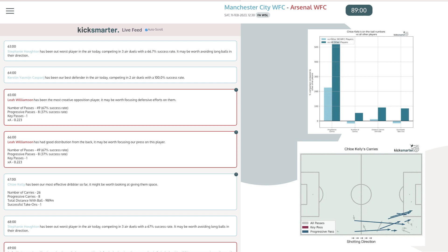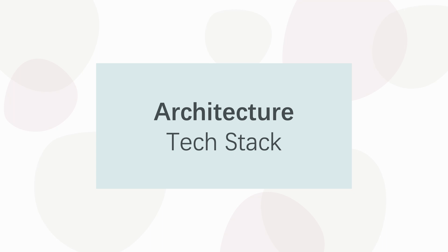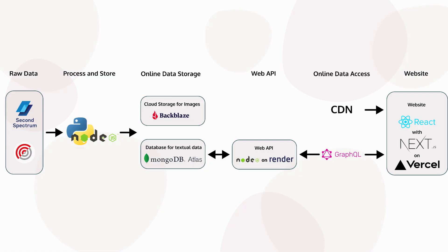That's the end of the demonstration. Now, briefly, our architecture and tech stack: the raw data — Second Spectrum tracking data and StatsBomb events data — is processed in Python and turned into JSON files. Text data is loaded to a MongoDB Atlas database online, and we used Backblaze cloud storage for images. We use a Node.js web API to serve data to the website, with GraphQL to query it. The front end is built with React and Next.js, hosted on Vercel.